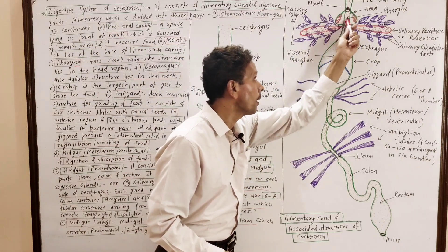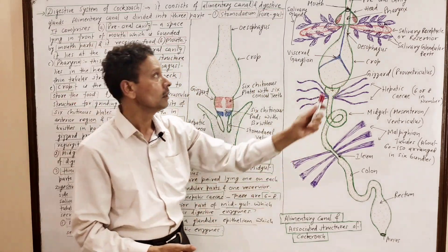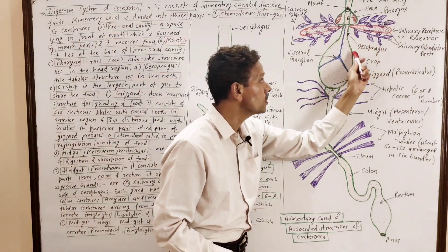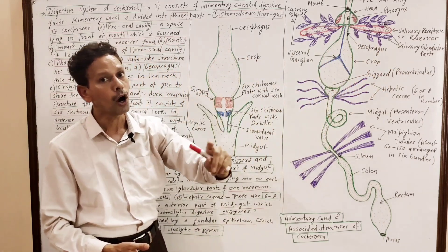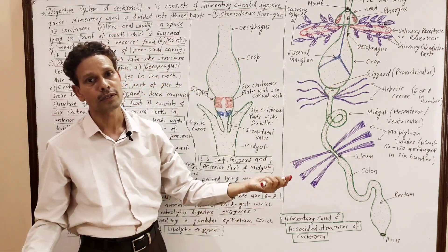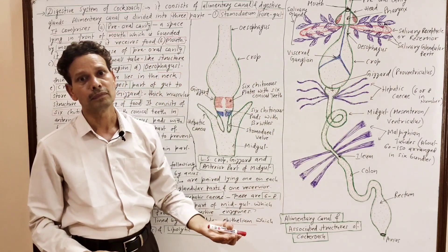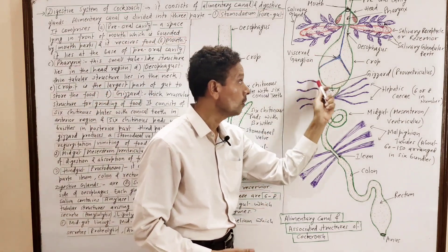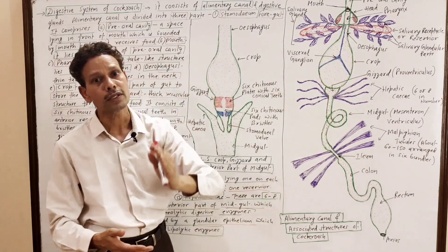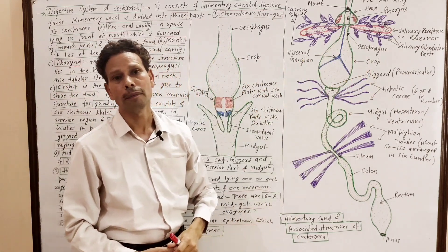The mouth leads into another part of the alimentary canal — the pharynx. This small tubular structure, the pharynx, lies in the head region. The next part of the alimentary canal is the esophagus, a small thin tubular structure that lies in the neck region of the cockroach. Then a very important part — the crop, which is the largest and widest part of the alimentary canal and involves in the storage of food particles.